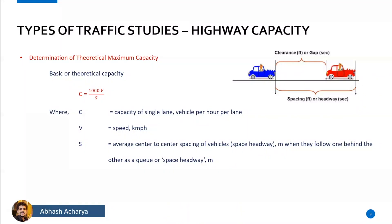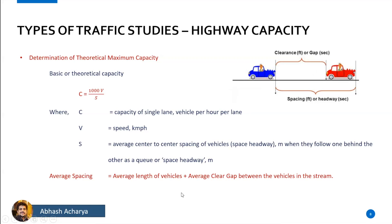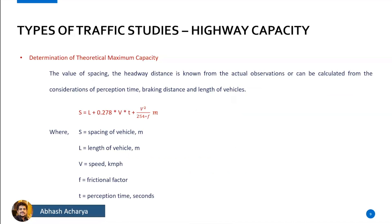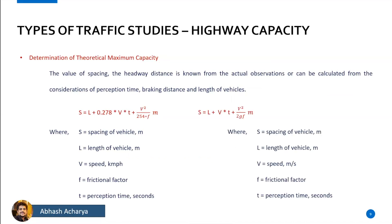What is the spacing? The gap plus the average length of the vehicle. The spacing formula is 0.278bt plus b² by 254f. This is the formula for the length of the spacing.